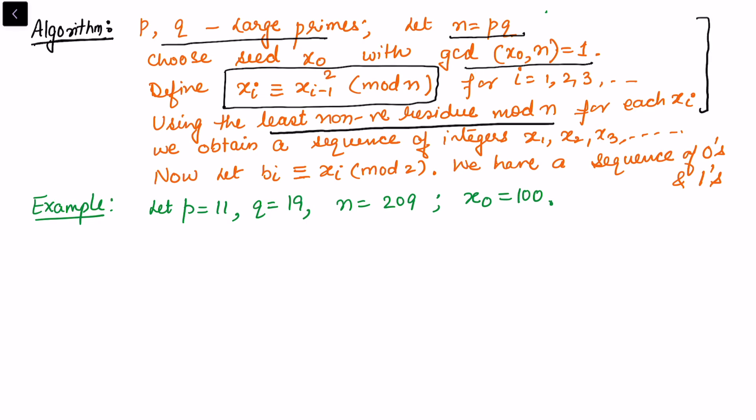that case the random number which is generated is further congruent to some bi - bi is the notation I am using for bit - and put this as modulo 2. So of course with respect to modulo 2 we will have